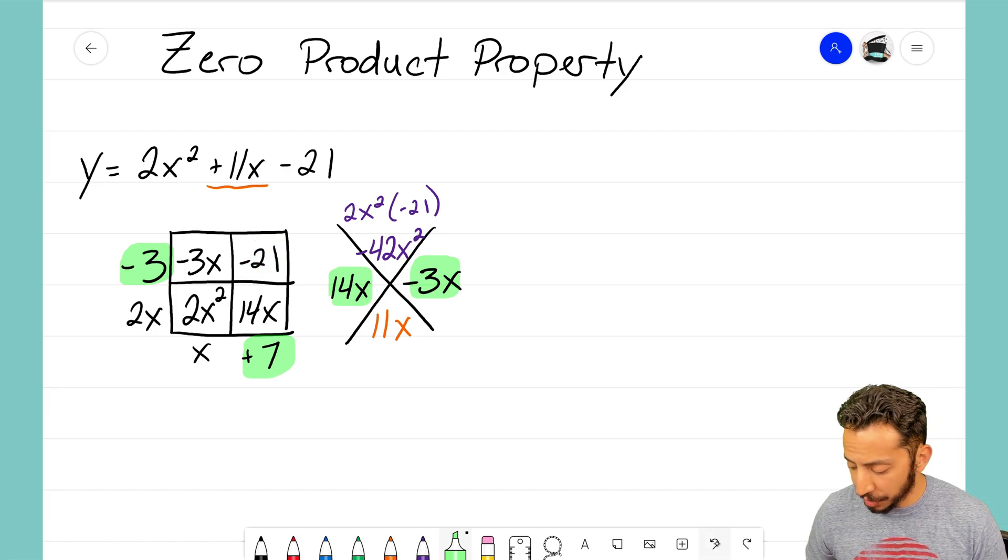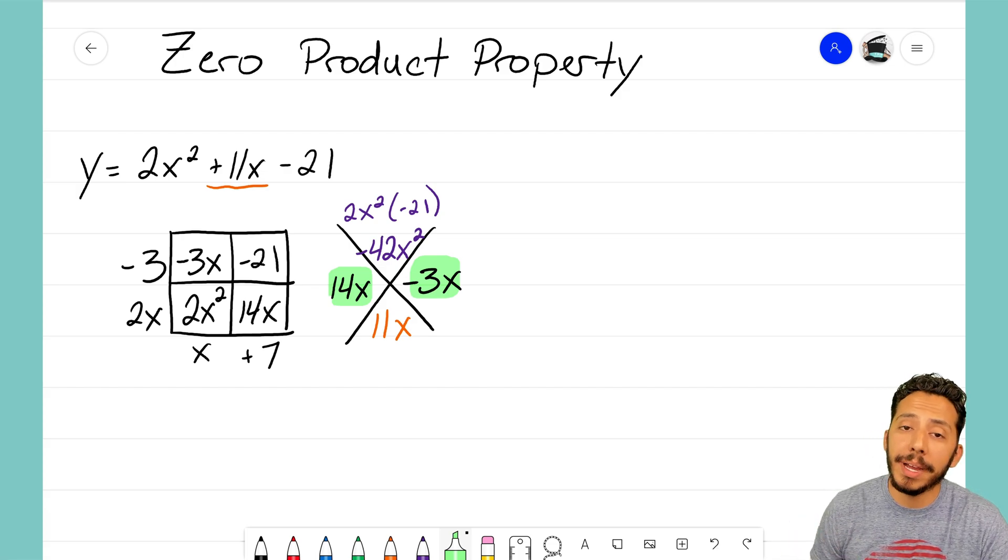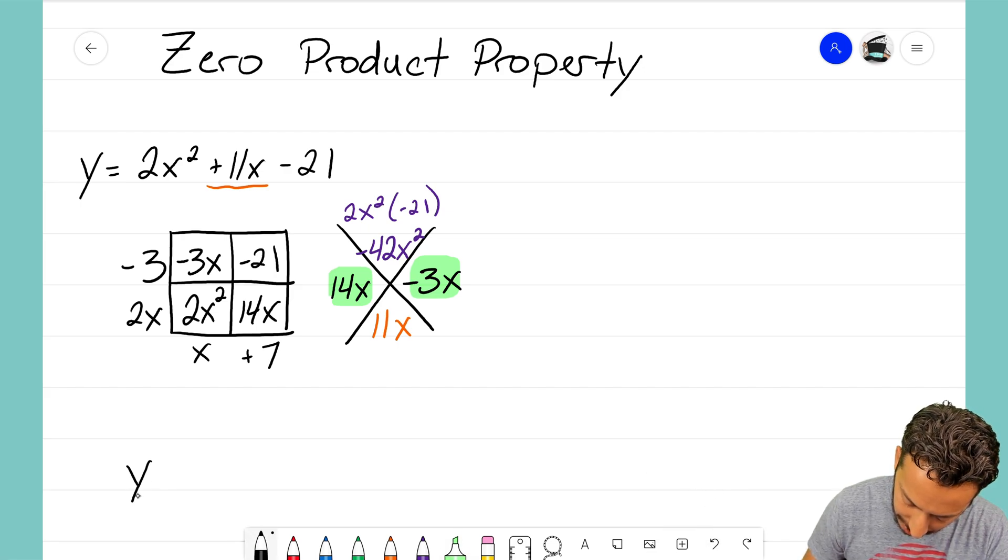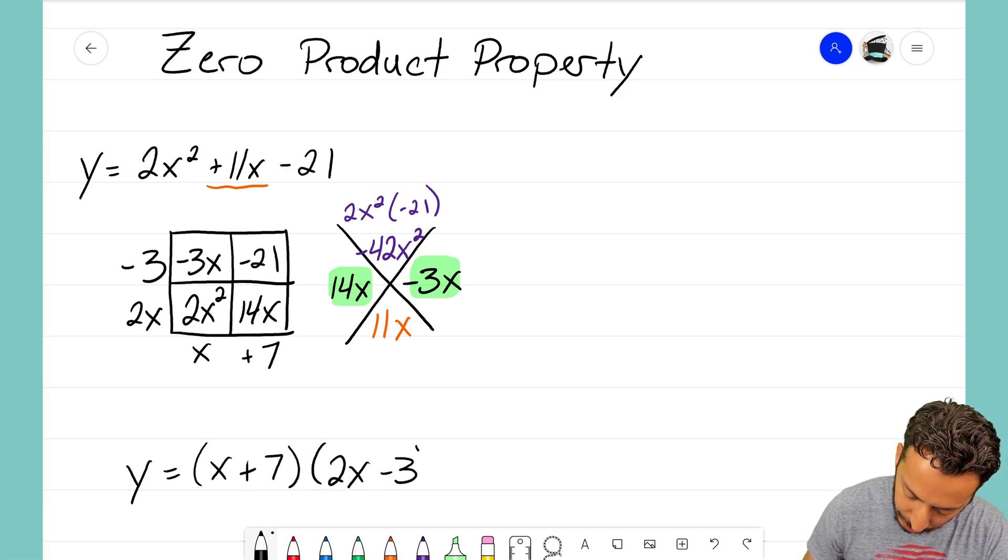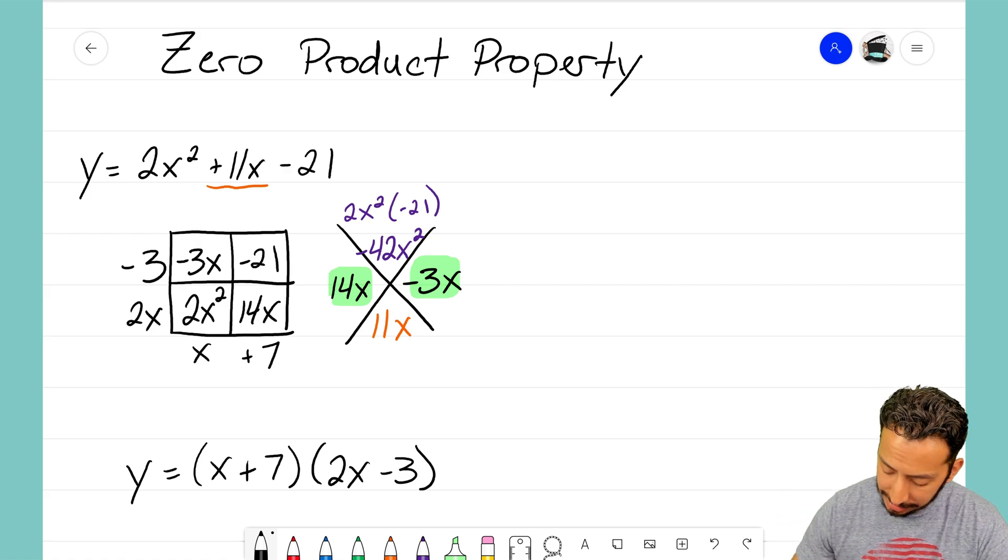So I now know that I have the right dimensions for that generic rectangle and I can write my equation now in factored form. My equation is y equals x plus 7 times the quantity 2x minus 3. I have successfully factored that quadratic and I now have it in factored form, which means then I can use this factored form x plus 7 and 2x minus 3 with the zero product property to figure out where those two x-intercepts are.